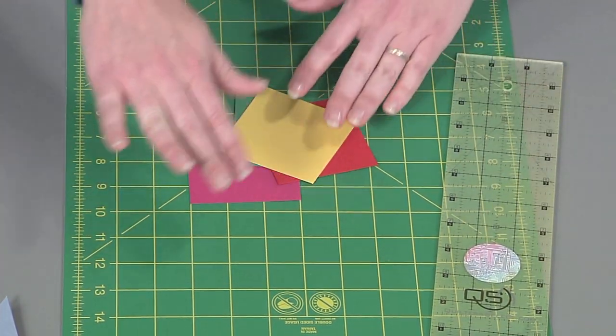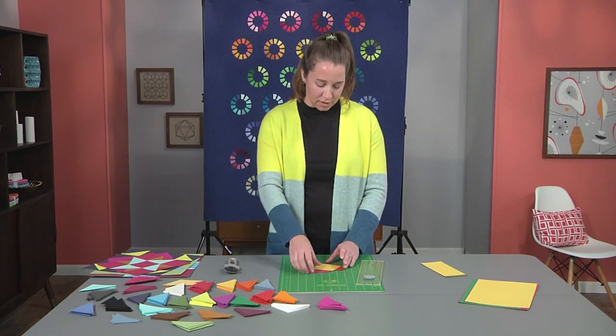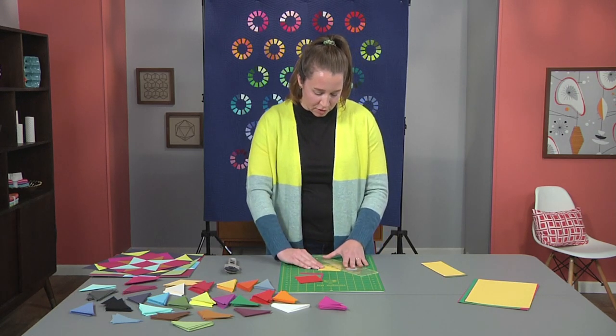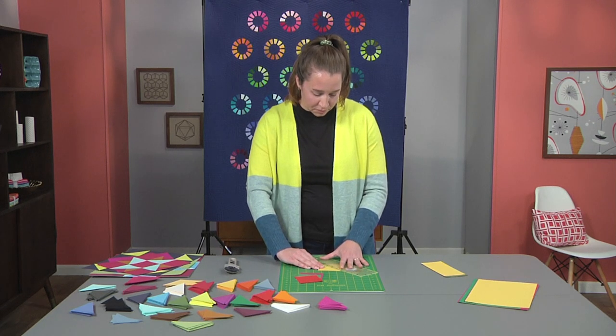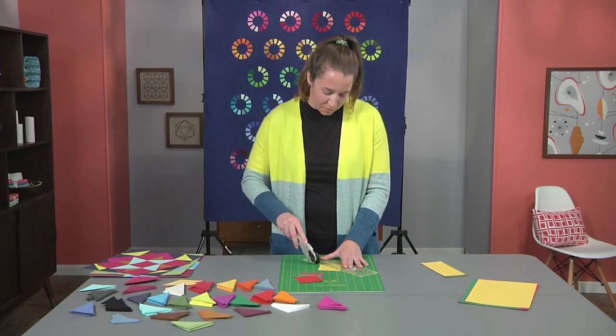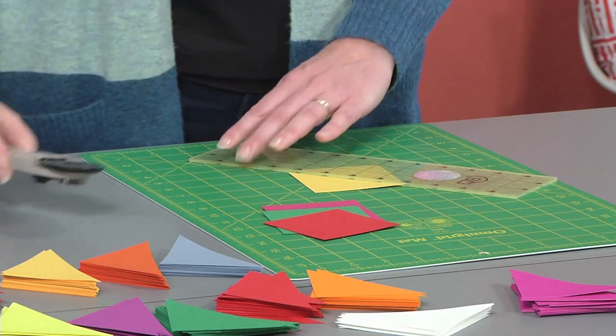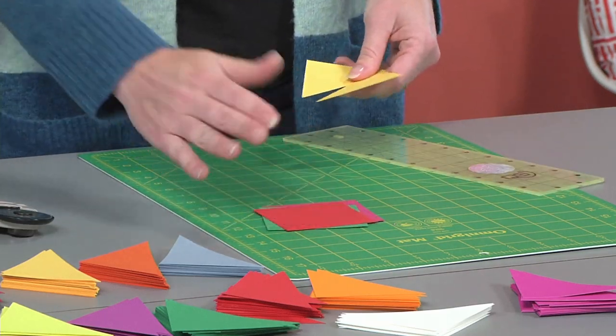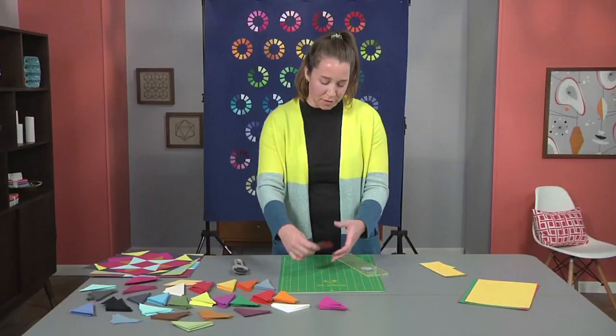After you've got a big stack of squares cut, you can go ahead and cut each of those at a 45 degree angle. And you can again stack those and cut many half square triangles out.